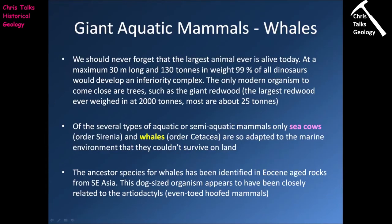Now let's move on to the giant aquatic mammals, and in particular the whales. We should never forget the largest animal that's ever lived is alive today — the blue whale, at a maximum length of 30 meters and a maximum weight of 130 tons, capable of giving 99% of dinosaurs a serious inferiority complex. Of the several types of aquatic or semi-aquatic mammals in the modern world, only the sea cows (order Sirenia) and the whales (order Cetacea) are so adapted to the marine environment that they couldn't survive on land.